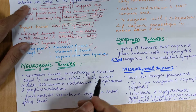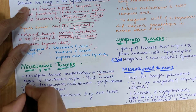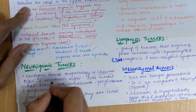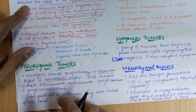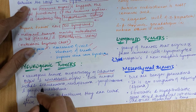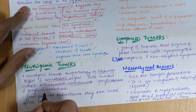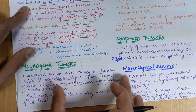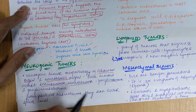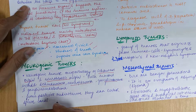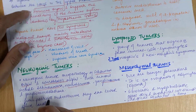Neurogenic tumors are oncopathologies of Schwann cell origin and neuroblastic origin. From Schwann cells we get schwannoma and neurofibroma, and from neuroblast cells we get ganglioneuroma and ganglioneuroblastoma. These tumors arise from the posterior mediastinum and can further enter the spinal canal.